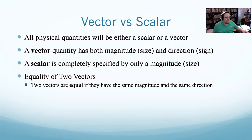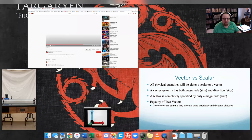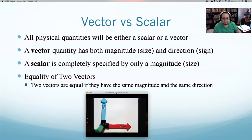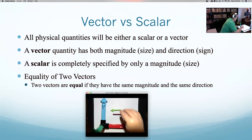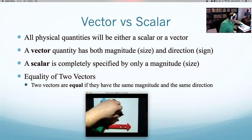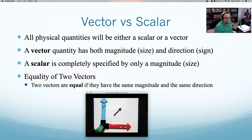We're going to have to talk about vectors in terms of their direction and their magnitude. Before, in last chapter, I could just say 'is it to the right or to the left?' Now we're going to start doing two-dimensional, so now I have things going at angles and it's going to become a little more complicated.